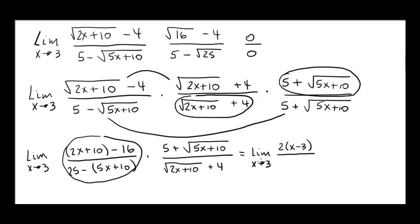15 minus 5x we can factor out a 5 and that leaves us with 3 minus x times 5 plus the square root of 5x plus 10 divided by the square root of 2x plus 10 plus 4.